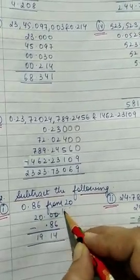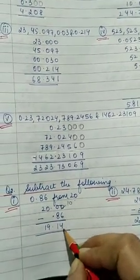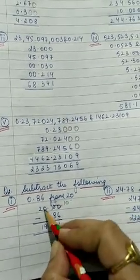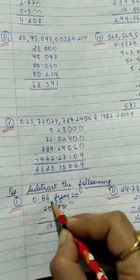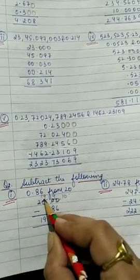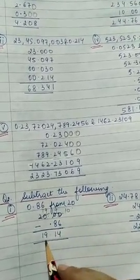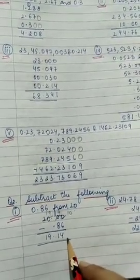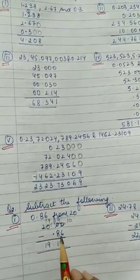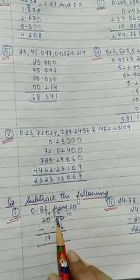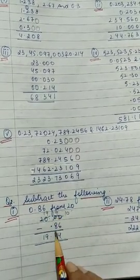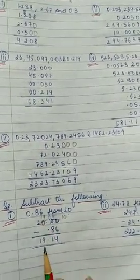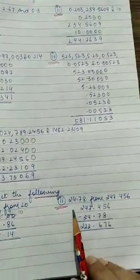Subtract: 10 minus 6 is 4, then 9 minus 8 is 1. From 20, when we gave 1 to the next column, we are left with 19. So the answer is 19.14. To repeat: 20.00 minus 0.86 — 10 minus 6 is 4, 9 minus 8 is 1, and 20 minus 1 gives 19. Answer: 19.14.